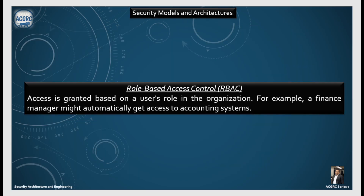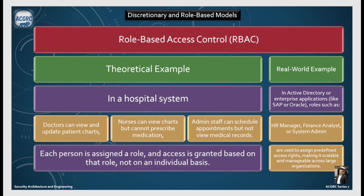In Role-Based Access Control, access is granted based on the user's role in the organization. For example, a finance manager might automatically get access to the accounting system. In a hospital system, doctors can view and update patient charts, nurses can view charts but cannot prescribe medications, and admin staff can schedule appointments but not view medical records. Each person is assigned a role and access is granted based on that role, not on an individual basis.